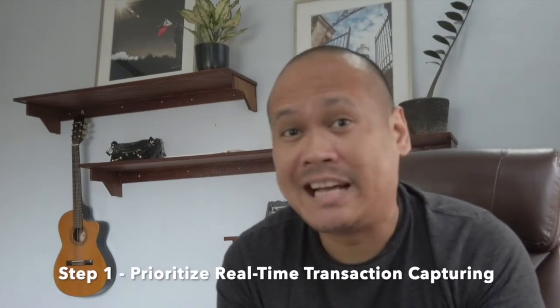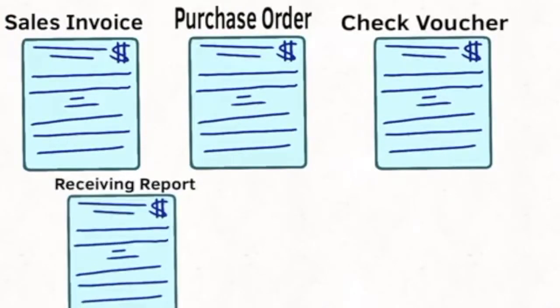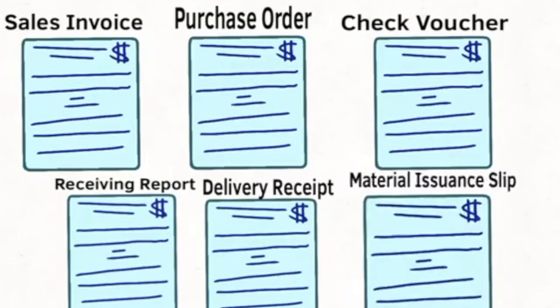Step 1: Prioritize real-time transaction capturing. Identify the forms that you currently use and then map them out to the modules of the ERP system that you acquired. Ask your vendor to customize the default system forms according to your format. The typical forms are sales invoices or sales receipts, purchase orders, accounts payable and check vouchers, receiving reports, delivery receipts, or material issuance slips. System installation plus formatting of these forms and printing them will probably take about three days, then two days for end-user setup and training.